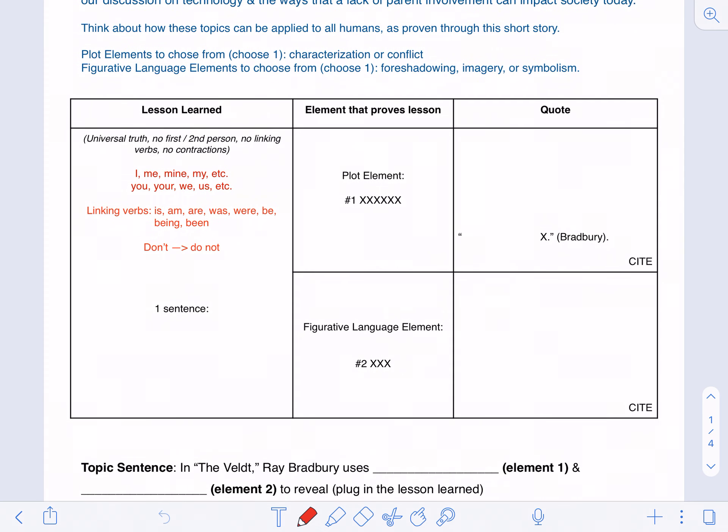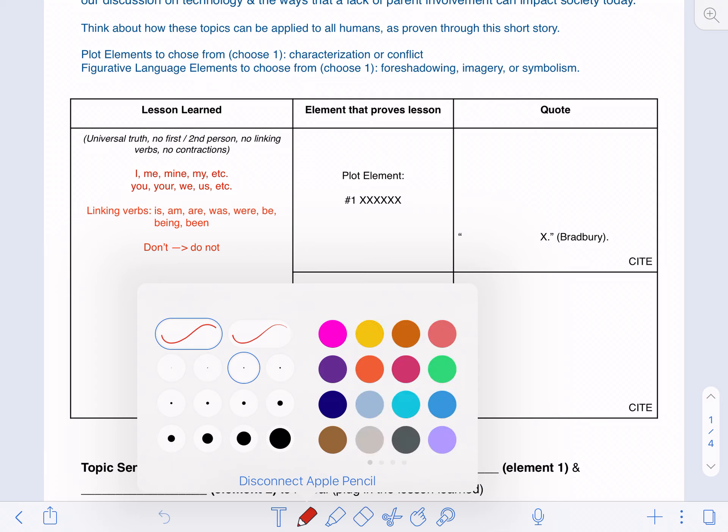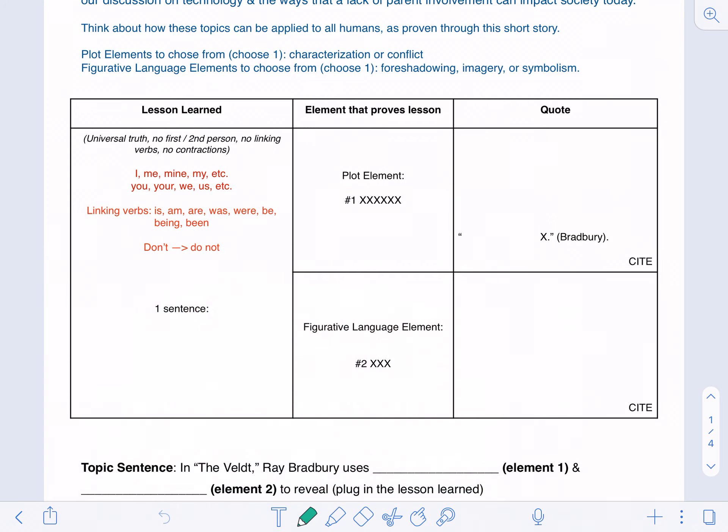I first wanted to review the brainstorming box because I wanted you to see a little bit of the connection. First, you have your lesson learned which you're going to type somewhere in this box following these rules. And then you want to make sure that the quote that you choose is the element that you choose.